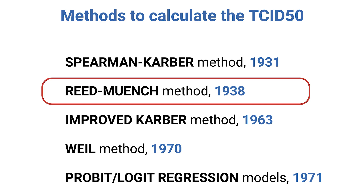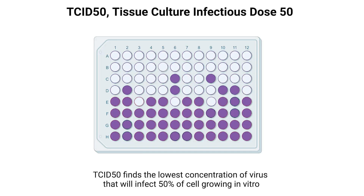Hello everyone, and welcome back. In our last video, we explored the Reed-Muench method, a classic approach for calculating the TCID-50. Just a quick recap: TCID-50 stands for Tissue Culture Infectious Dose 50%, which is the amount of virus required to infect 50% of the cells in a culture. It is used to determine the infectious dose of a virus stock.